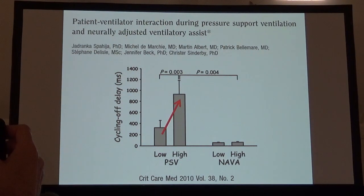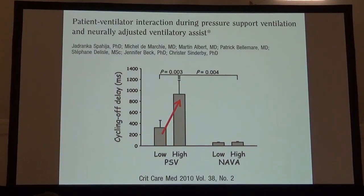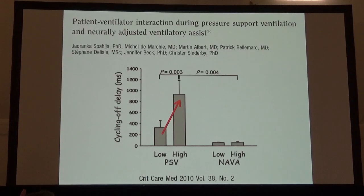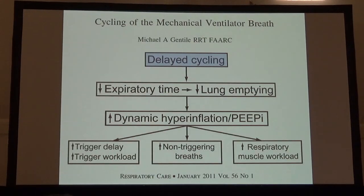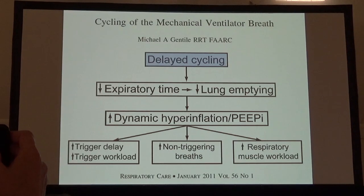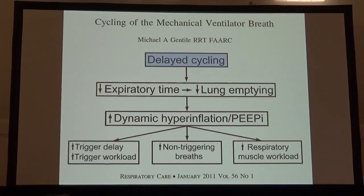This is a well-known problem of pressure support ventilation that is magnified by high pressure support levels. That means that the higher the pressure support, the longer the delay, and the longer the time the ventilator may be insufflating during neural expiration, especially in obstructive patients. This may lead to dynamic hyperinflation and auto-PEEP, finally leading to difficult triggering and ineffective efforts.